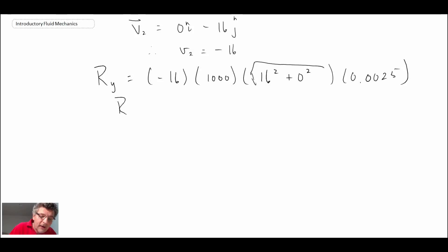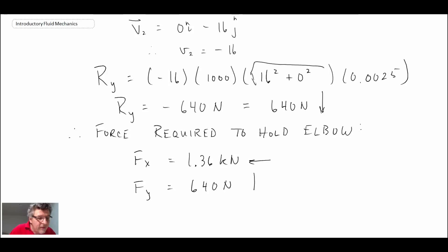Doing all of that, we get R-Y is minus 640 newtons. It's a negative. What is that telling us? It's telling us that that is 640 newtons in the down direction. So what we can write is the force required to hold the elbow. We can say it is F-X is 1.36 kilonewtons in the left and F-Y, 640 newtons down.